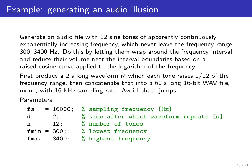And the goal is to produce a two-second long waveform in which each tone raises one-twelfth of this frequency range, and then we concatenate that into a 60-second long 16-bit WAV file with 16 kHz sampling rate. And in order to avoid hearing a click every two seconds, we also want to avoid phase jumps, so we want there to be an integer number of sine periods for all these sine waves happening within two seconds.